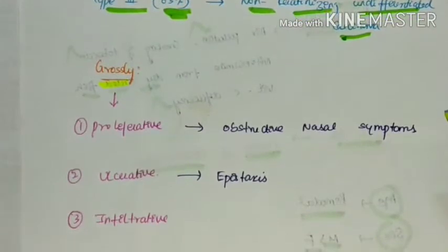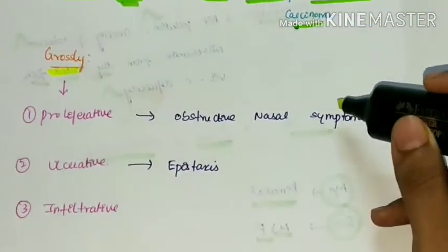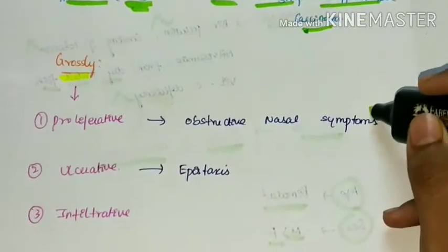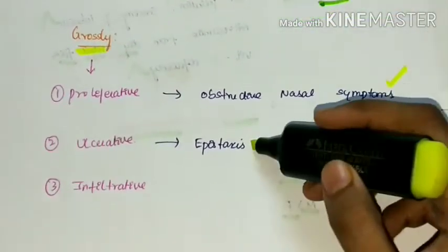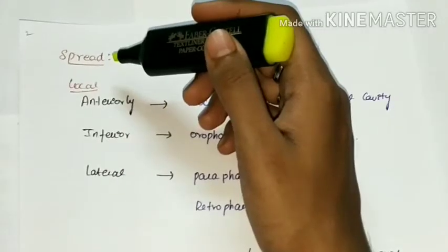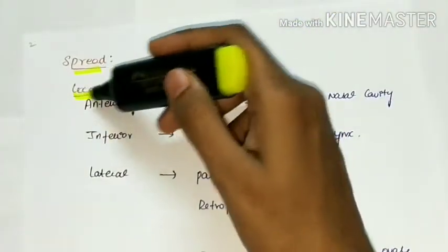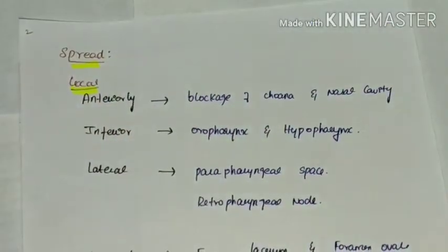Grossly, nasopharyngeal carcinoma can be of three types: proliferative, ulcerative, and infiltrative. Proliferative causes obstructive nasal symptoms. If ulcerative, it can lead to epistaxis, or it can be infiltrative. The spread of nasopharyngeal carcinoma - first the local spread.